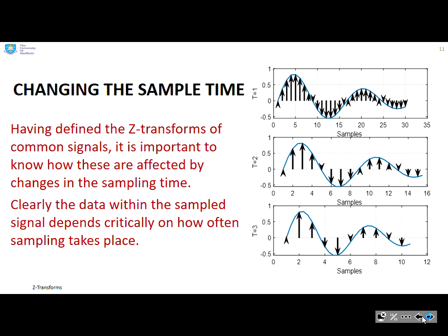What's the impact of changing the sample time? With the same continuous time signal represented by a blue curve, but with very different sample rates — sample rate of one, two, and three — you can see the sampled signal is very different. The information you capture depends upon the sample rate, and that will therefore also affect the Z-transform.